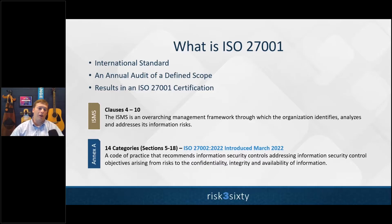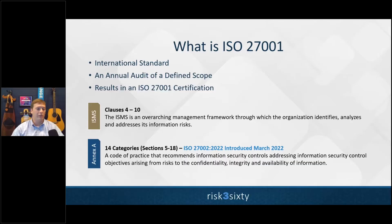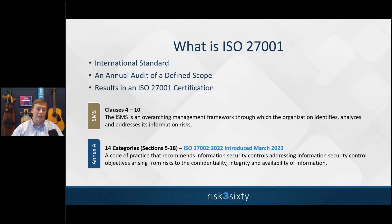With information security, if your organization processes information that's sensitive in any way, you probably have stakeholders who care about the security of that. ISO 27001 specifically is an information security management system — an international standard recognized worldwide. You do actually get a certification, independently verified, which you can hand to a stakeholder. It's also broken down into annual cycles, with annual audits to first attain and then retain the certification.